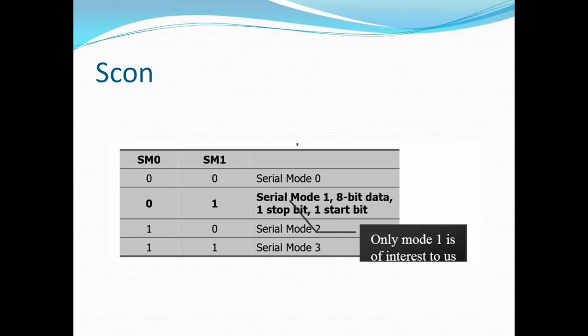When SM0 and SM1 are 00 it indicates serial mode 0. When 01, it is mode 1. When 10, it is mode 2. When 11, it is serial mode 3. Out of these four modes, we are interested only in mode 1, as the other three modes are rarely used today.